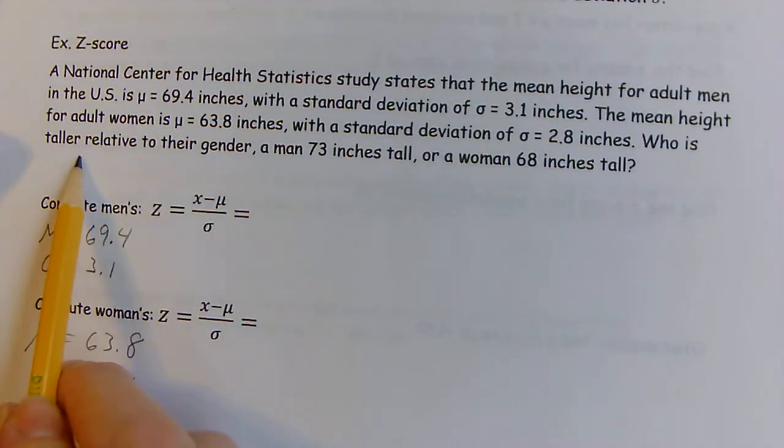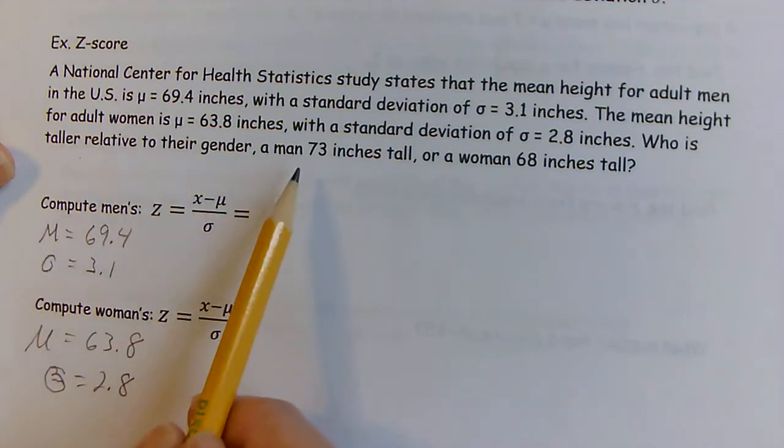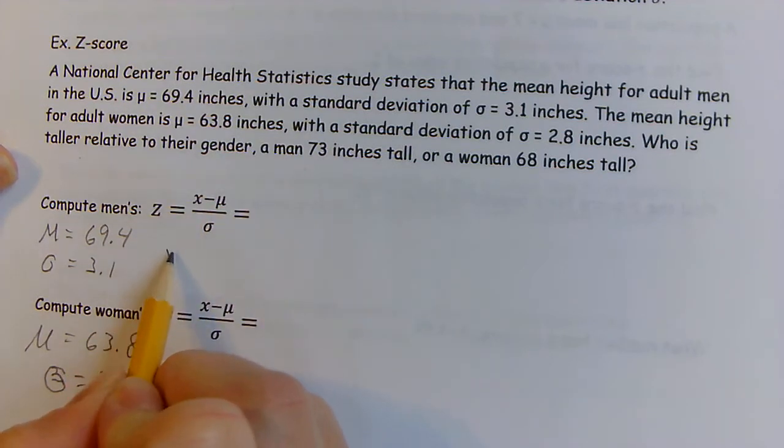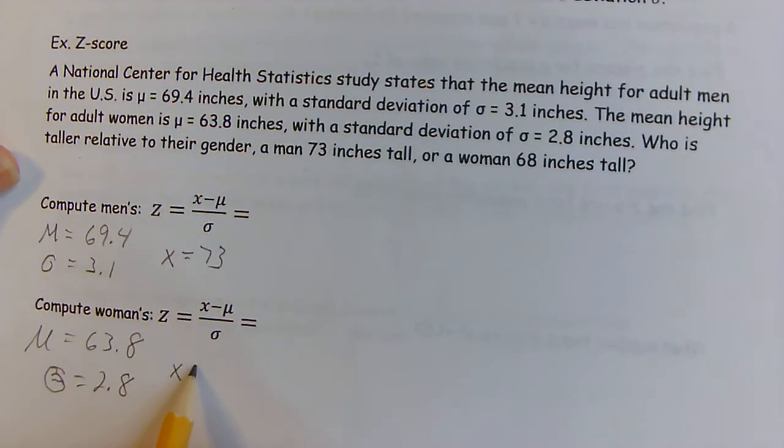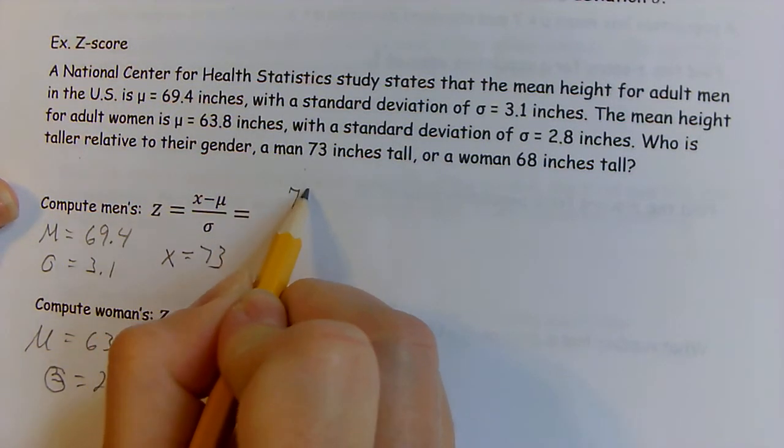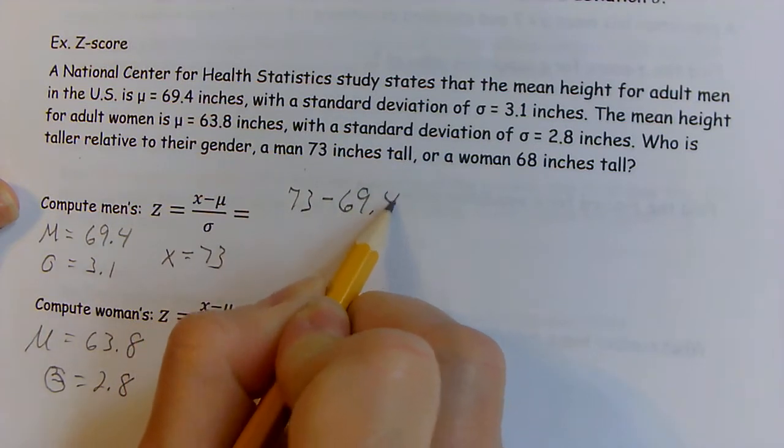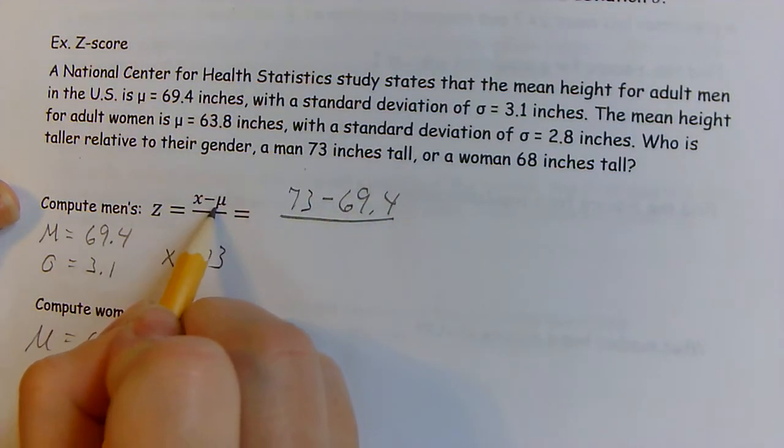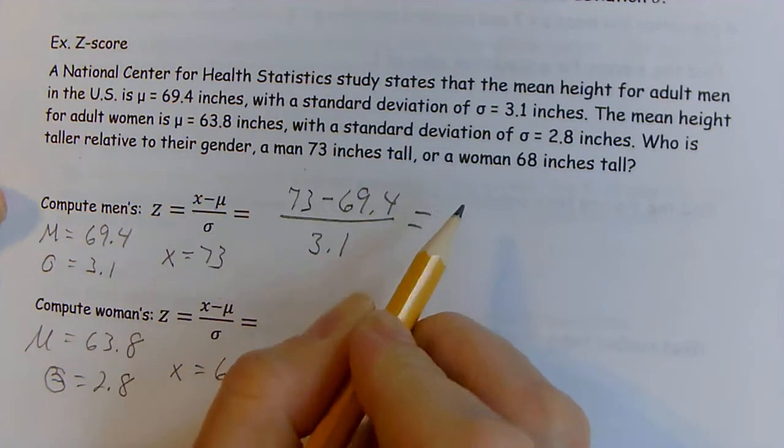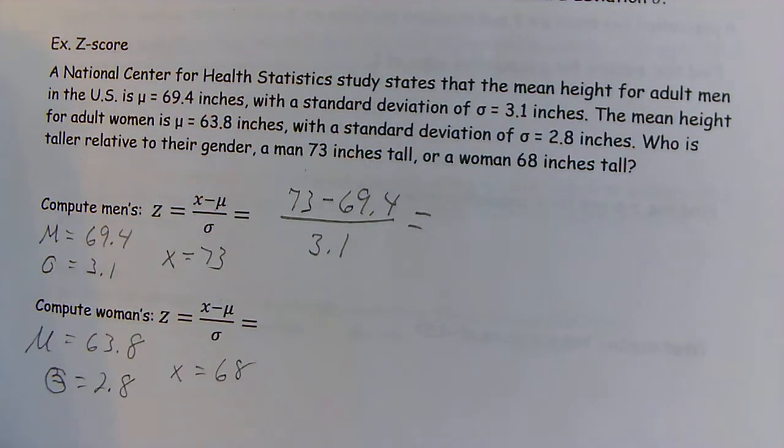So the question is who's taller relative to their gender, a man who's 73 inches tall or a woman who's 68 inches tall? The data value for the men is 73 and the women is 68. To get the z-score, we take the data value, subtract the population mean, and divide by the population standard deviation.